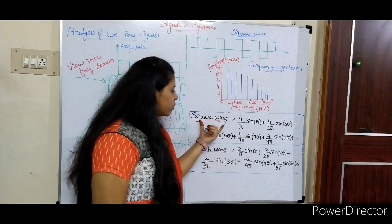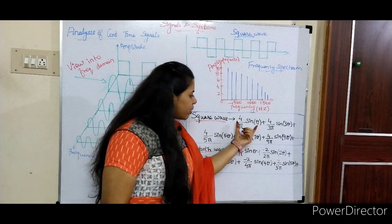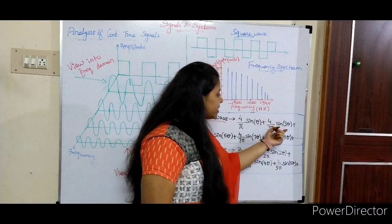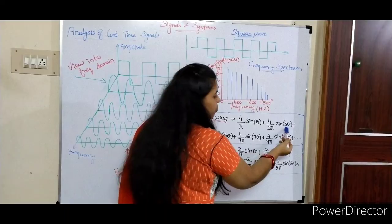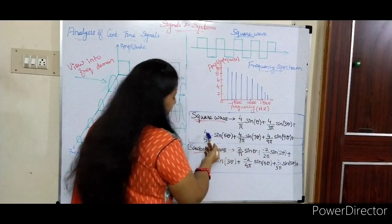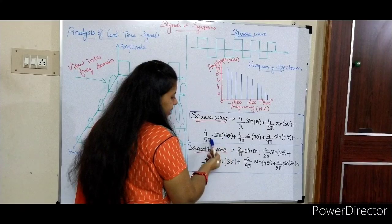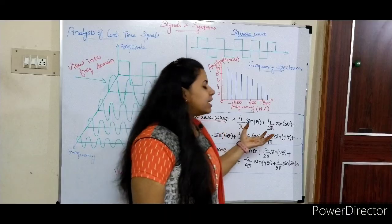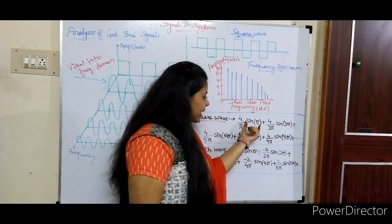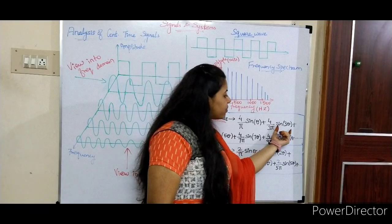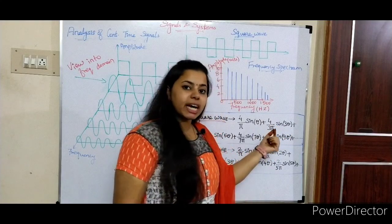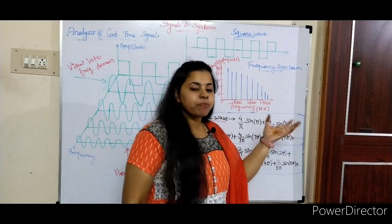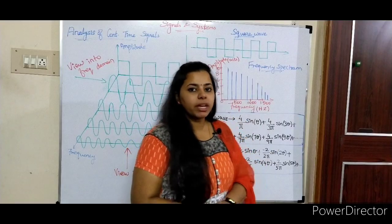For a square wave, we start with 4/π × sin(θ). Each sine wave added has a different frequency and amplitude. The frequencies are odd multiples: sin(θ), sin(3θ), sin(5θ), sin(7θ), sin(9θ) — these are called harmonics. The fundamental frequency is sin(θ), and its integral multiples are the harmonics.